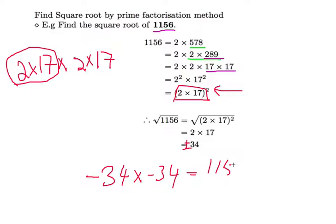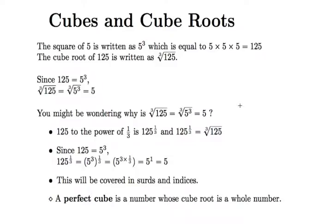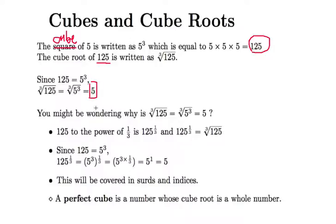Now let's move on to cubes and cube roots. The cube of 5 is written as 5³, or 5 to the power of 3, which equals 125 because 5 × 5 × 5 = 125. The cube root of 125 is written with the cube root symbol, and it equals 5, because 125 = 5³.